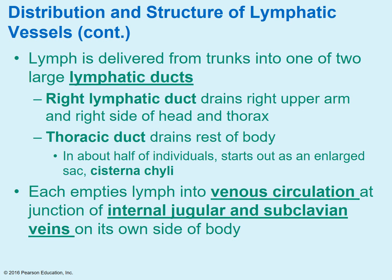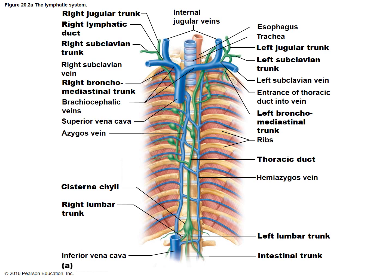From the trunks, lymph is going to flow into one of two very large lymphatic ducts: the right lymphatic duct and the thoracic duct. The right lymphatic duct drains the right upper arm, the right side of the head, and the thorax area. The thoracic duct drains the rest of the body. In many individuals, it starts out as an enlarged sac called the cisterna chyli. Both ducts drain the lymph into the venous circulation right around the junction of the internal jugular and subclavian veins.